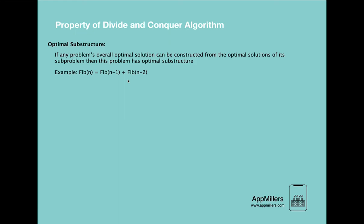You might wonder why we need to learn divide and conquer algorithm. The answer is simple: the divide and conquer approach is most effective when the problem has optimal structure property. If a problem can be divided into subproblems and solved by combining those solutions, divide and conquer is the best approach. Some examples of divide and conquer algorithms are merge sort, quick sort, and binary search. In the next lecture we will learn how these algorithms use divide and conquer to solve problems, then look at more problems solvable with this approach — problems asked in many interview questions. So see you in the next lecture.